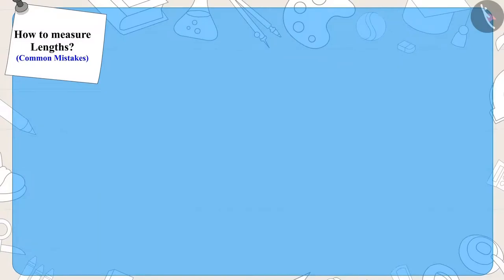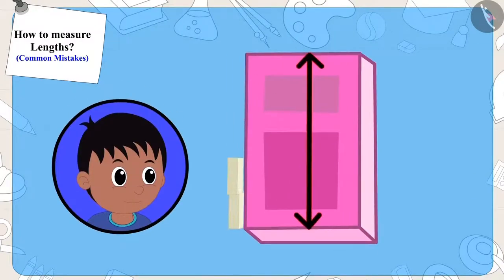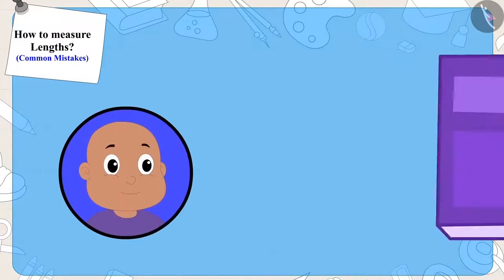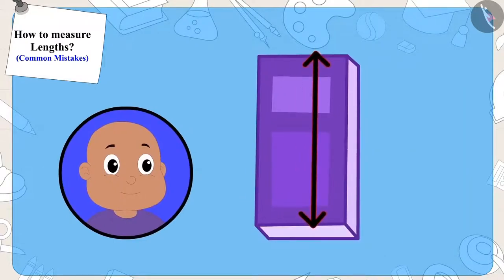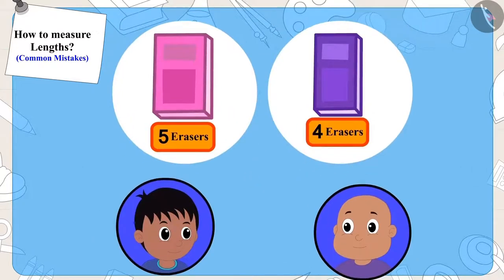Raju had measured his notebook, placing the eraser in this way. But while measuring his notebook, Bablu placed the eraser a little above the bottom end. That is why the length of his notebook was four erasers long instead of five erasers long.